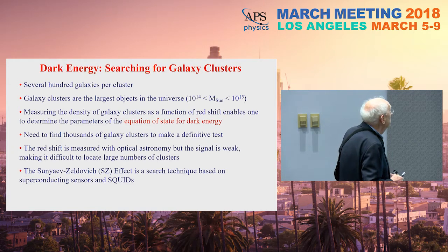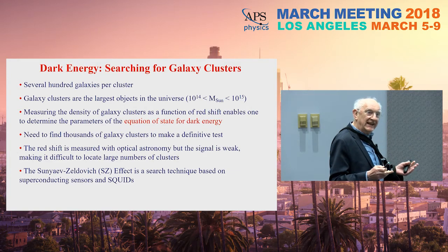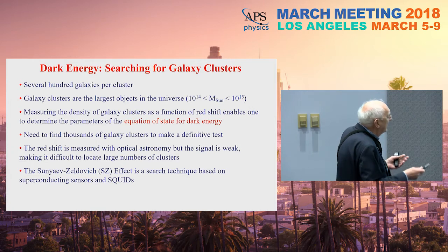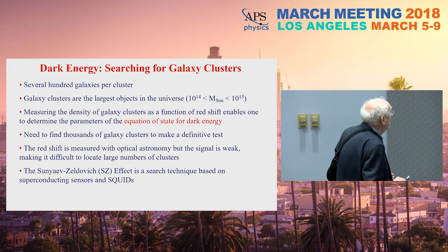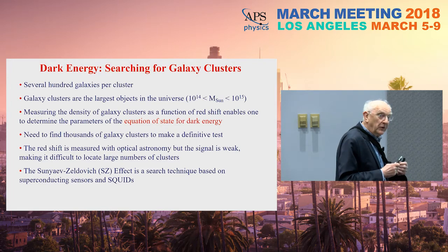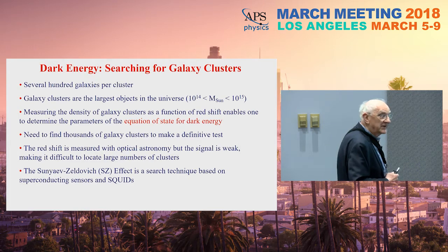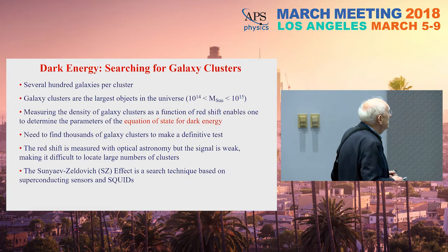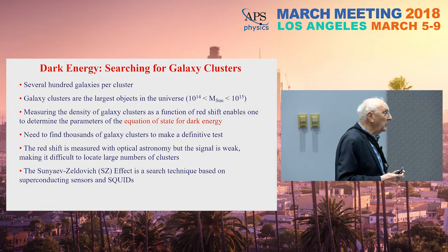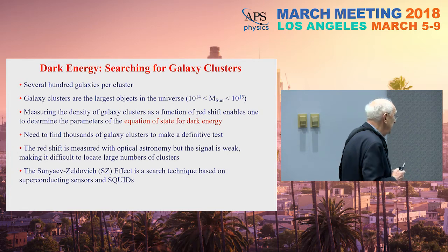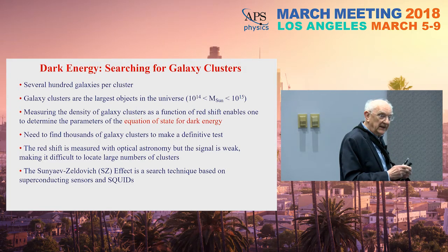A galaxy cluster contains several hundred galaxies and is among the largest objects in the universe, with a mass of 10¹⁴ to 10¹⁵ solar masses. Measuring the density of galaxy clusters as a function of redshift would enable us to determine the equation of state for dark energy. To do that, you need to find thousands of galaxy clusters. Finding them optically is very difficult because the optical signal is weak if you don't know where the cluster is. Fortunately, there is the Sunyaev-Zeldovich effect, a search technique based on superconducting sensors and SQUIDs.